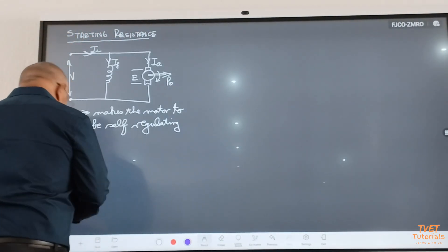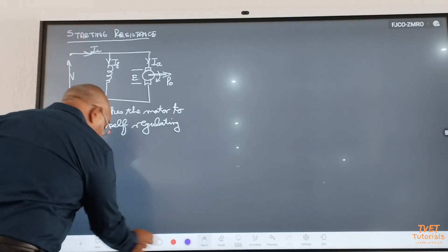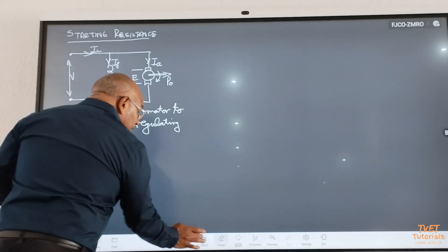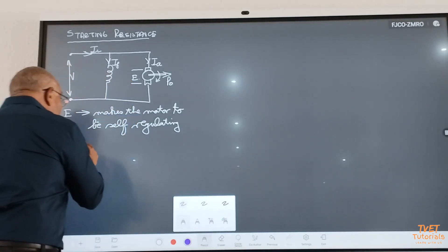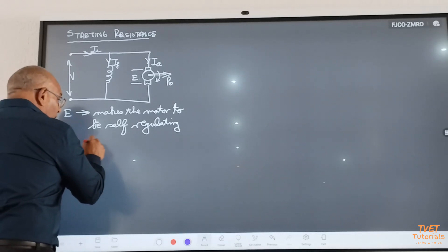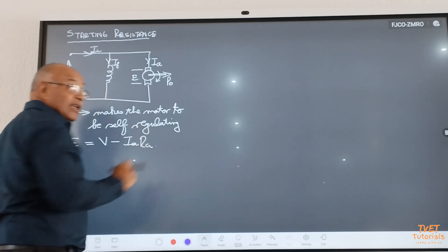It controls the speed and the amount of current drawn from the supply. If we look at the formula, the formula says E for any motor is V minus IA times RA. Is that correct?